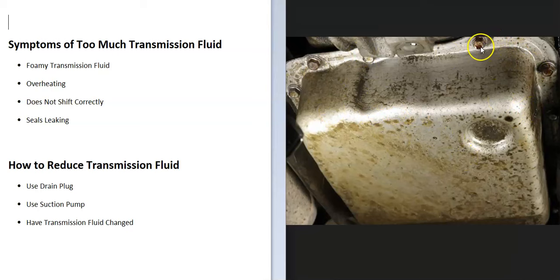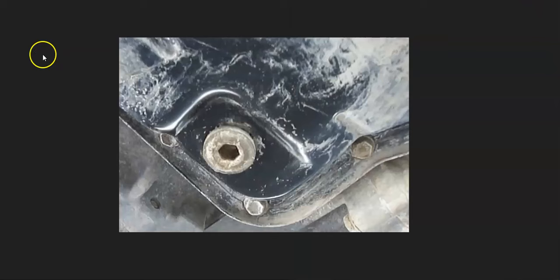How can you go about reducing the transmission fluid? One of the first things you can look for is if you have a drain plug on the transmission pan. These aren't too common - quite often there isn't one, especially on a Ford or a Chevy or something like that. But if you have a Toyota, sometimes there is one.